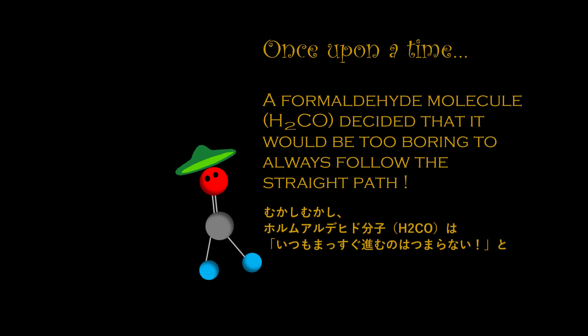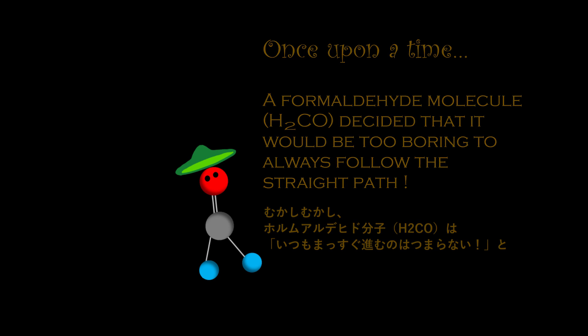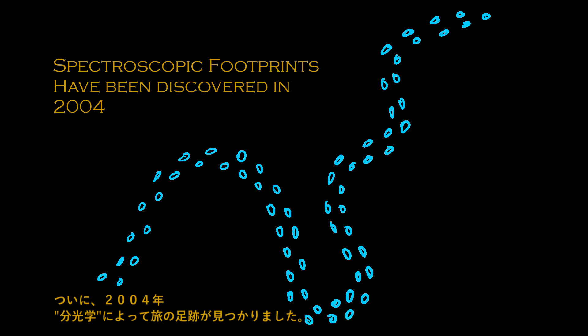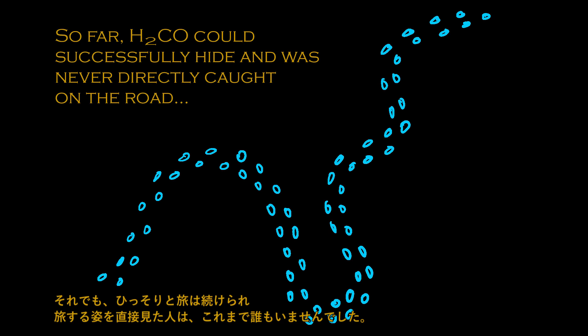Once upon a time, a formaldehyde molecule H2CO decided it would be too boring to always follow the straight path. It left the conventional dissociation path and started to roam around. This could not remain unobserved. Spectroscopic footprints were discovered in 2004. So far, H2CO could successfully hide and was never directly caught on the road — until now.